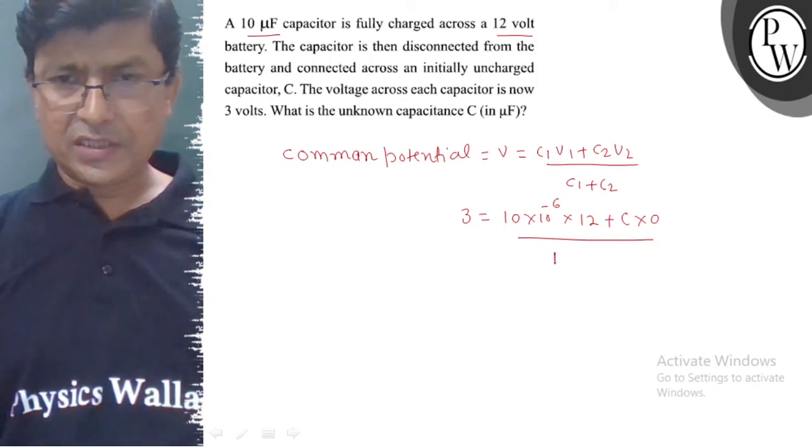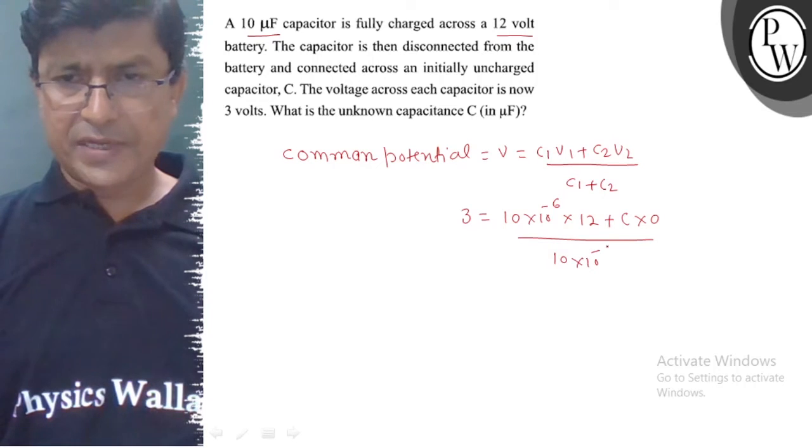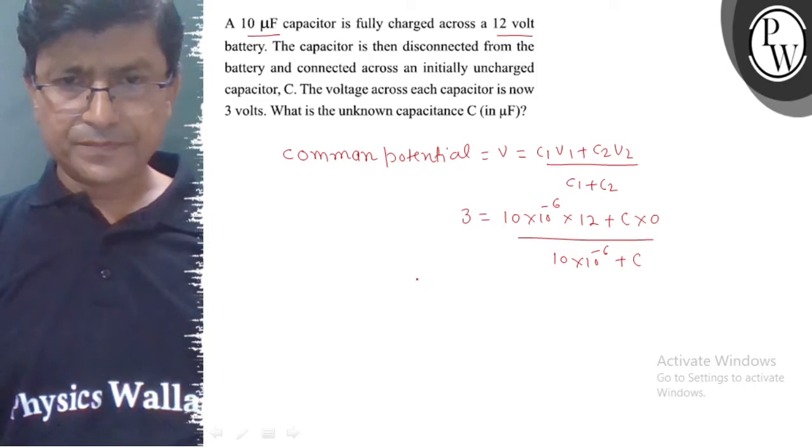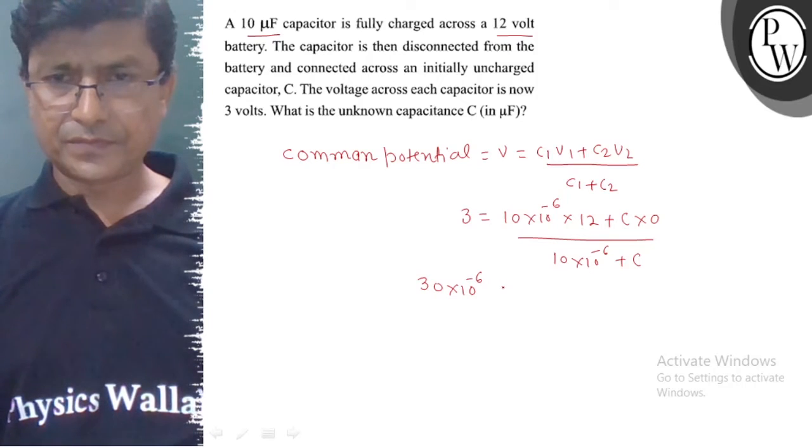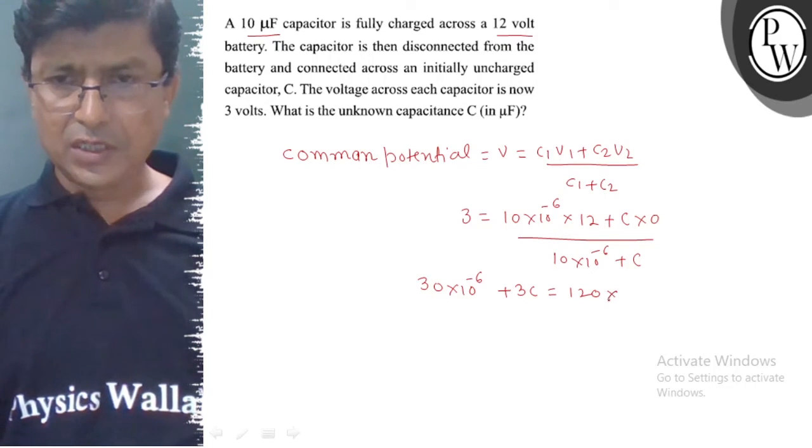Then, this is 10 into 10 to the power minus 6 plus C equal. So here we have equal to 30 into 10 to the power minus 6 plus 3C equal to 120 into 10 to the power minus 6.